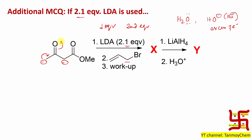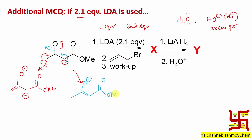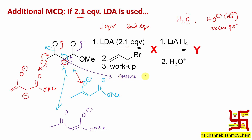Similarly, in this carbanion case: the active methylene carbanion has only one resonance canonical form, while the other carbanion has two canonical forms — one producing an enolate and another involving the ester carbonyl, also with stabilization. From this, you can clearly understand that the negative charge on the second carbanion is more delocalized. If it is more delocalized, the charge density on that carbon is relatively less. Therefore, the active methylene carbon center — with less delocalization — will act as the better nucleophile.